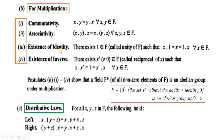Set F میں multiplicative identity ہونا چاہیے۔ Existence of inverse: there exists non-zero x' belonging to F such that x·x' = 1 and x'·x = 1. یعنی set F میں تمام x کے لئے x' ہے اور دونوں کا multiplication ہمیں multiplicative identity دیتا ہے۔